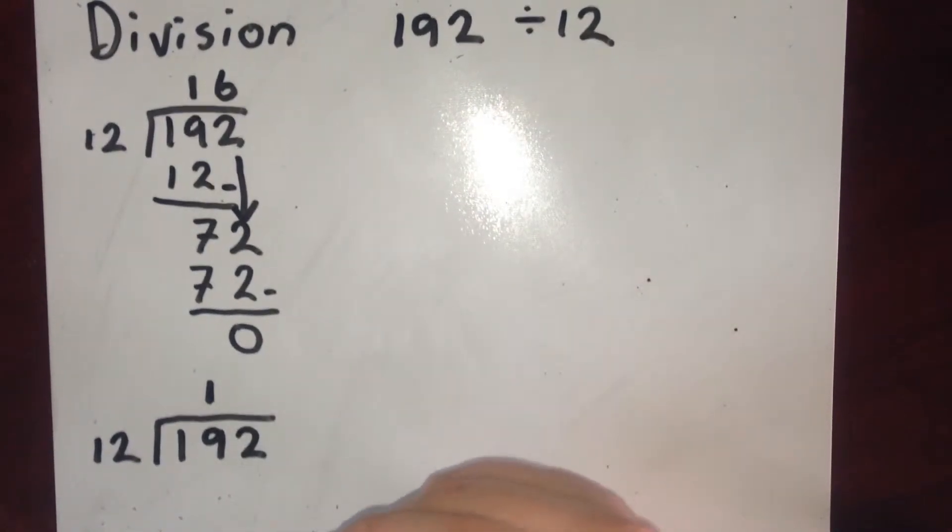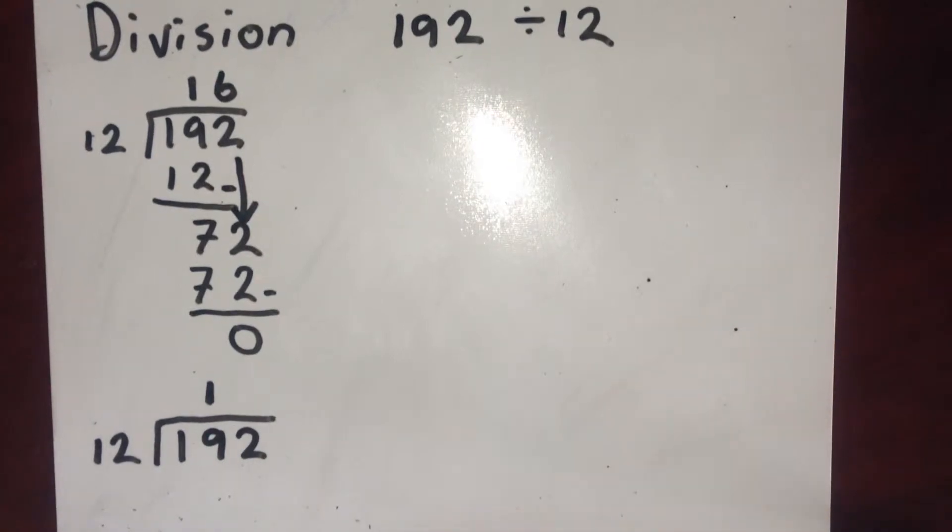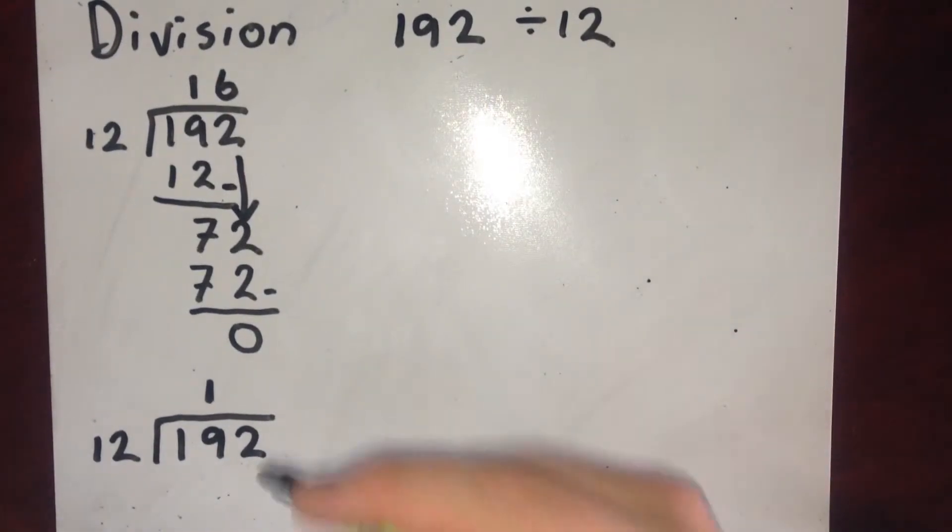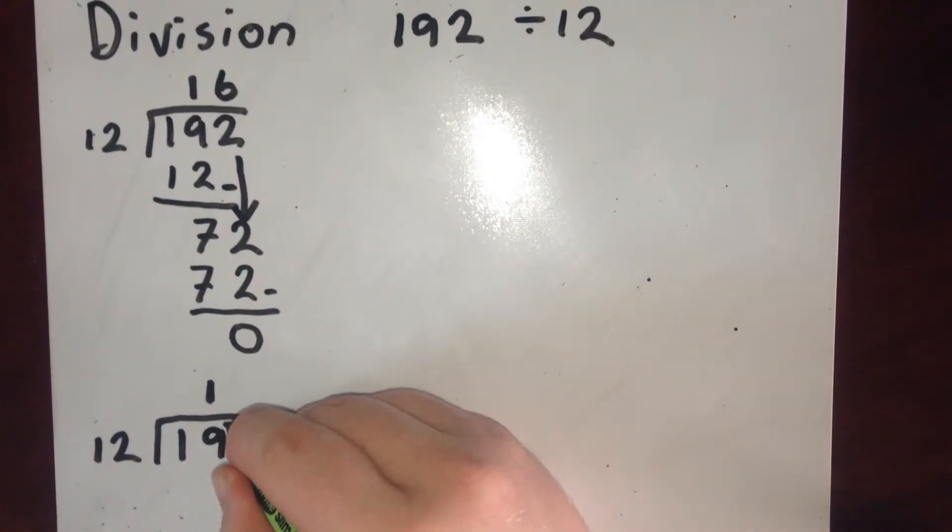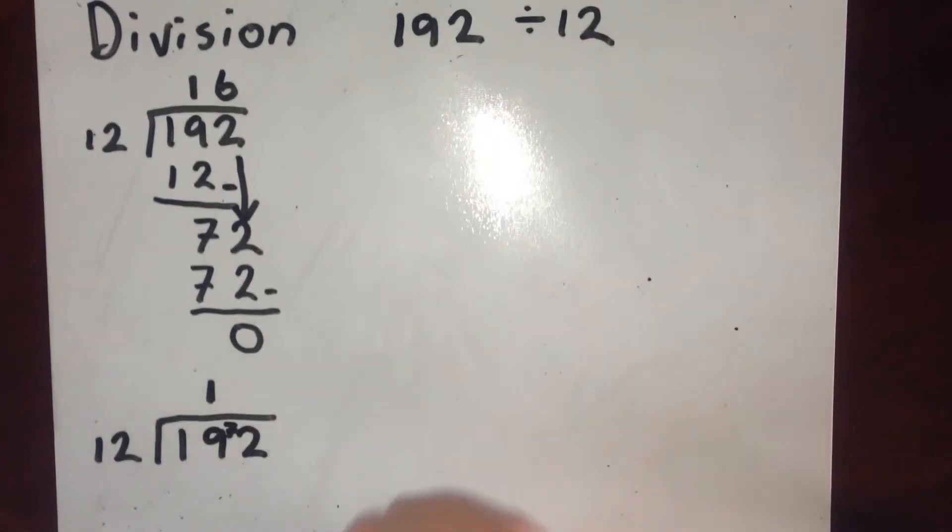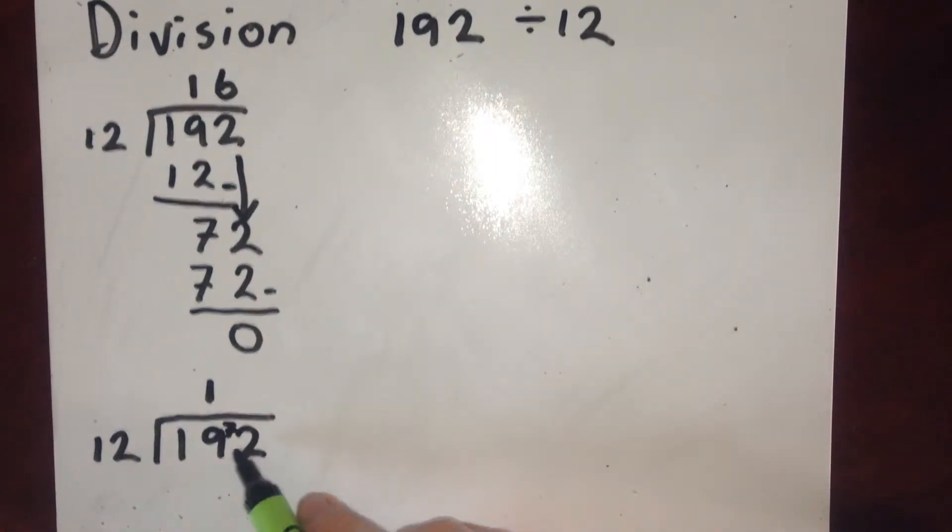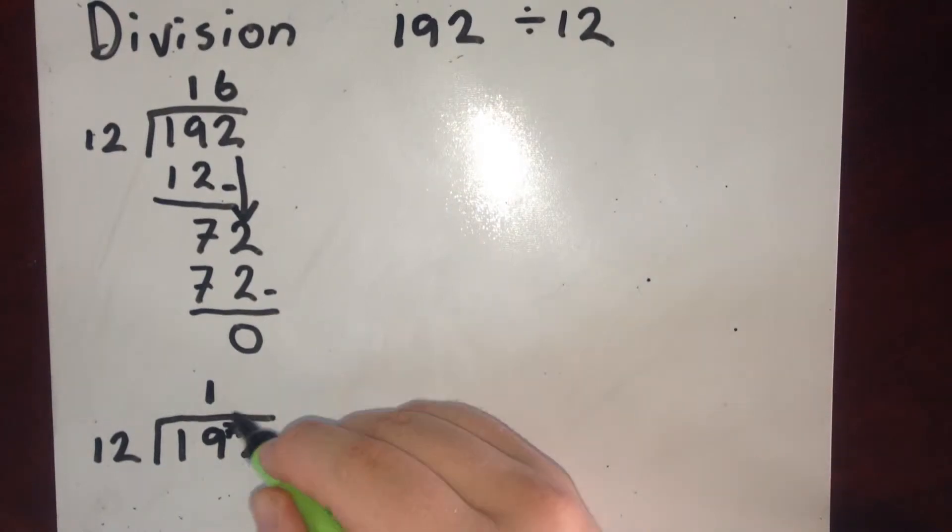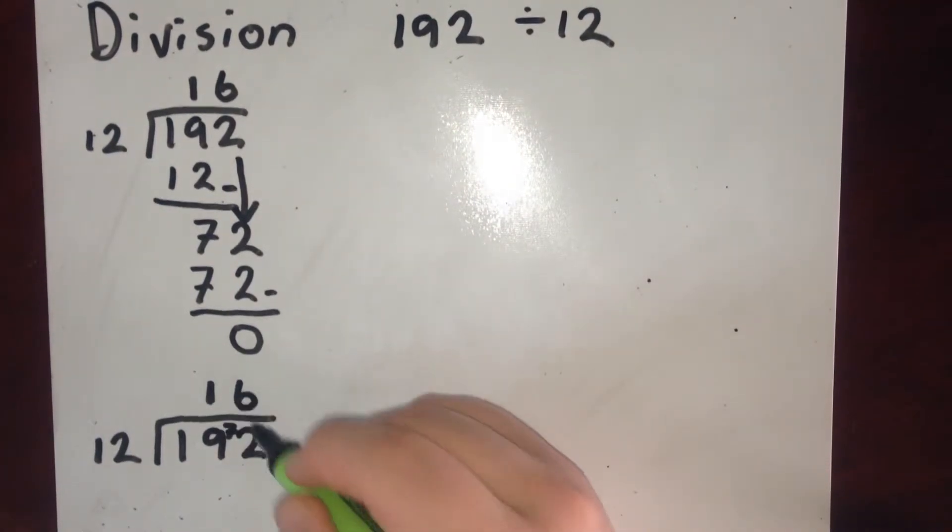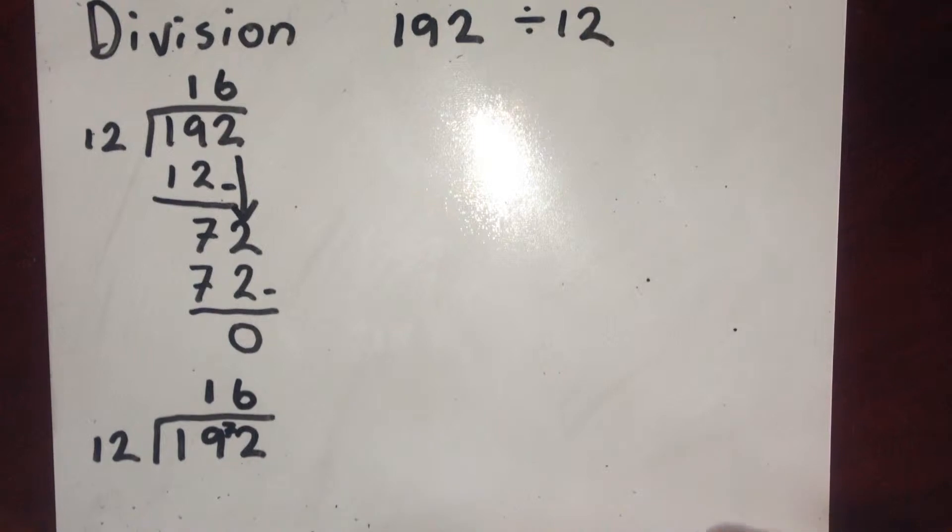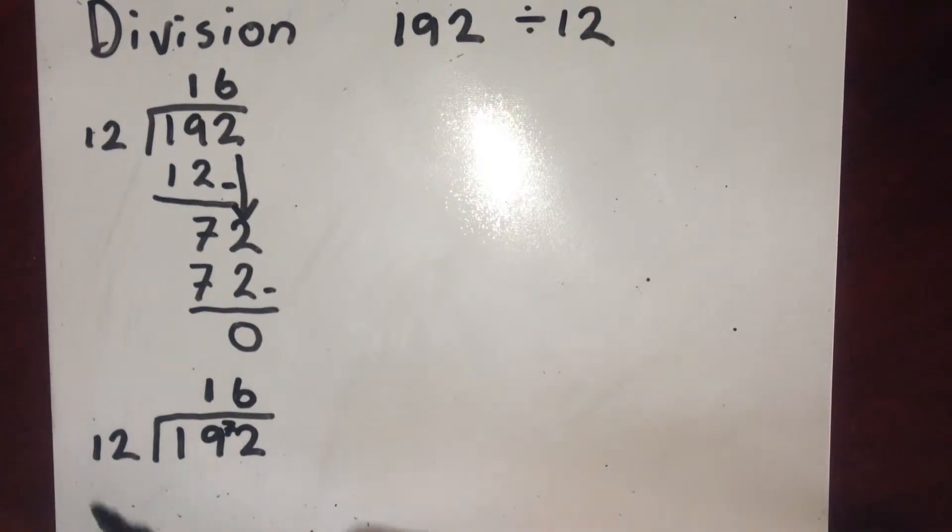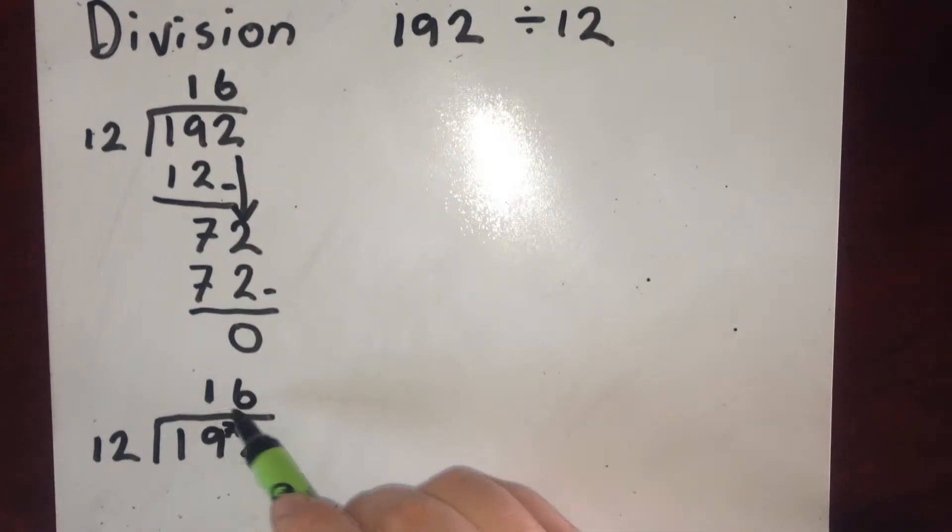But I've got 7 left over because the difference between 12 and 19 is 7. But I write this 7 here. I carry it over to the next number. And then I say how many 12s are in 72. There's 6. There's no left over. So that's my final answer. 192 divided by 12 is 16.